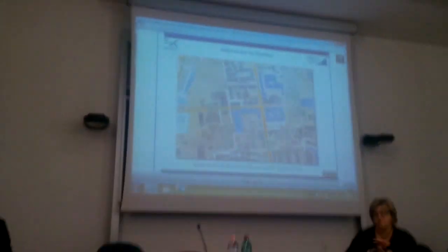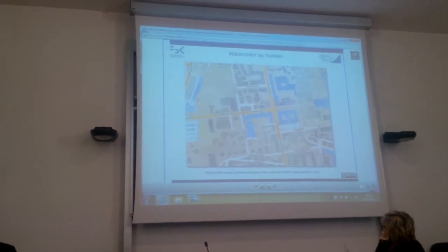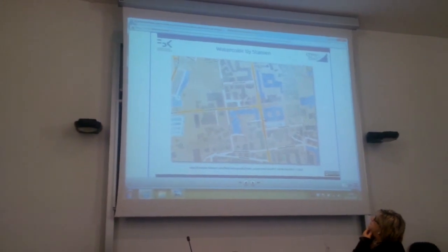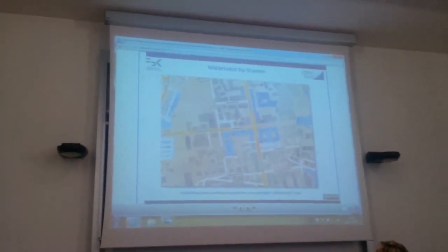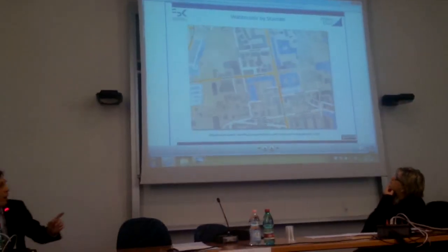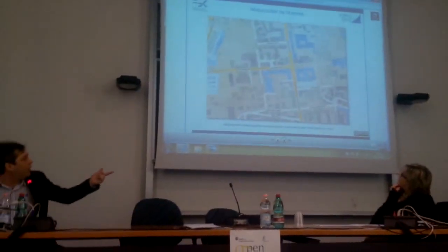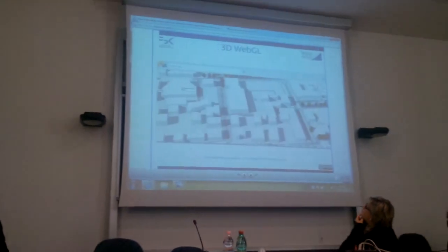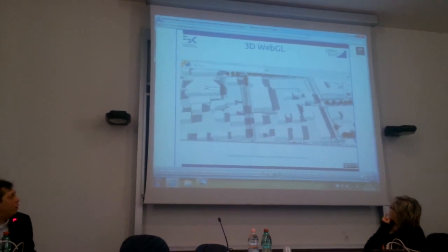If you have the data, you can transform it and create different kinds of maps. This is the concept of open data — if you open the data, you can do what you want. For example, a company in San Francisco uses a different technique to create watercolor maps of any place in the world. We have the same place — a university in Trento — rendered in another kind of map. You can also move in 3D. If you have the map data, you can do what you want.